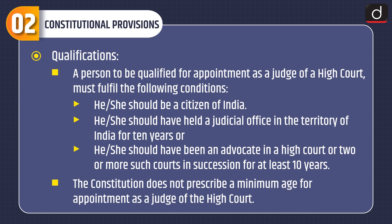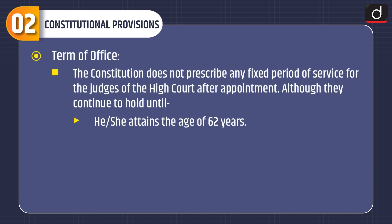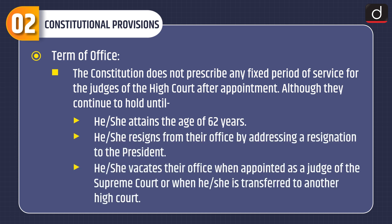The Constitution does not prescribe any fixed period of service for the judges of the High Court after appointment. Although they continue to hold office until he or she attains the age of 62 years, resigns from office by addressing a resignation to the President, or vacates office when appointed as a judge of the Supreme Court, or when transferred to another High Court.